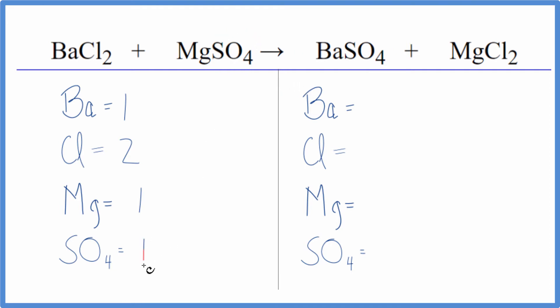One sulfate here, and then on the product side we have one barium again, just one sulfate. Then we have one magnesium and two chlorine atoms.